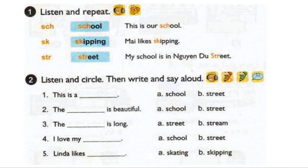Page 44. Lesson 3. Activity 1. Listen and repeat. 5. School. This is our school. 6. Skipping. My like skipping. Street. My school is in Nguyen Tzu Street.